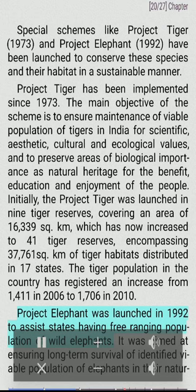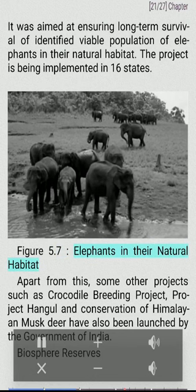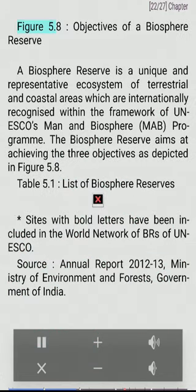Project Elephant was launched in 1992 to assist states having free-ranging populations of wild elephants. It was aimed at ensuring long-term survival of identified viable populations of elephants in their natural habitat. The project is being implemented in 16 states. Apart from this, some other projects such as the Crocodile Breeding Project, Project Hangul and Conservation of Himalayan Musk Deer have also been launched by the Government of India.